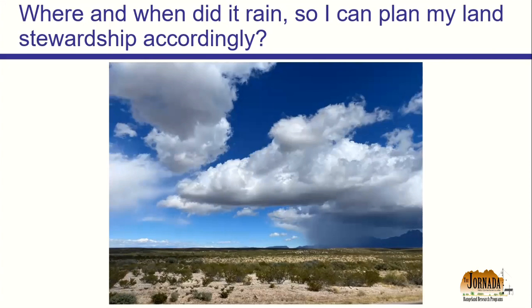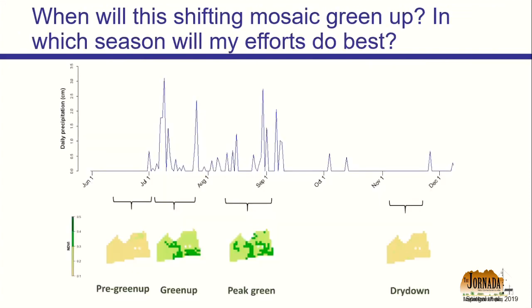Any of us living around here could have seen a scene like this yesterday: standing somewhere where it's not raining and not too far away it's raining. We all know that rain interacts with soils, vegetation greenness, and vegetation diversity, so it's really important to know where and when it rains so I can plan land stewardship accordingly. Timing of when vegetation is green and growing also changes a lot from year to year — you can't necessarily expect greenup from June or July to August every year. How do I plan for restoration, grazing, or other management when I don't even know when it's going to green up?